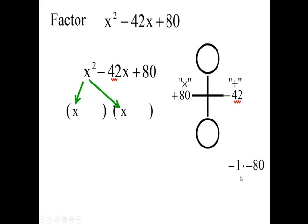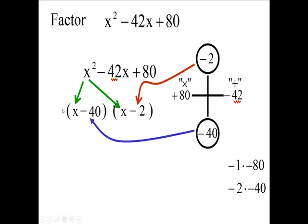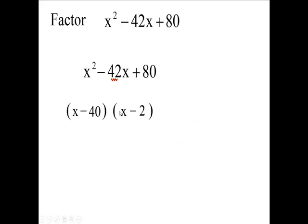So we would have 1 times 80, 2 times 40, and we're going to stop right here on the factors because these add up to be negative 42. So we use these two numbers. When you multiply them, you get 80, and when you add them, you get negative 42. So put that number over here and put this number over here. So there are my two factors now.